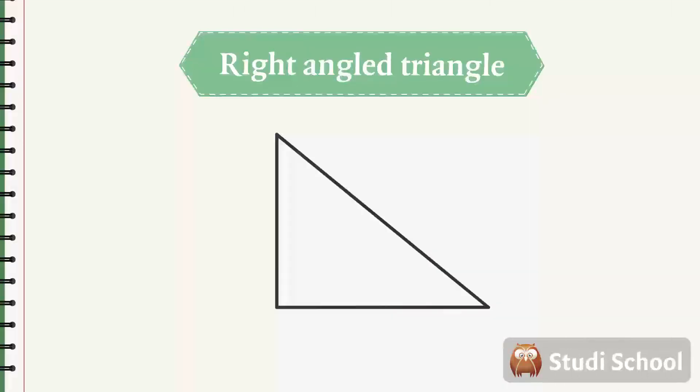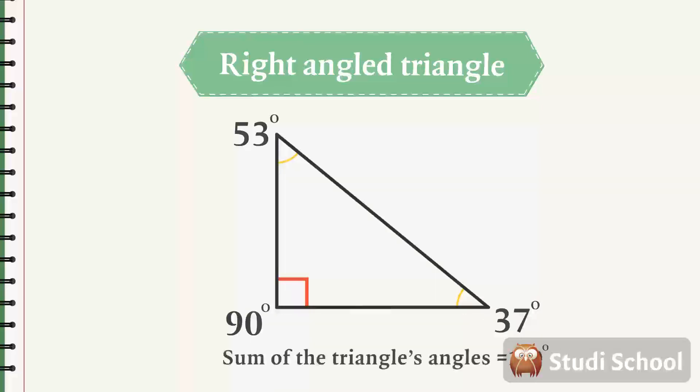The angles of a triangle have a special property. If you measure them carefully and add them together, you always get the sum of 180 degrees. This is a right-angled triangle, meaning one of the angles is 90 degrees. The other two are 53 and 37 degrees. 90 plus 53 plus 37 equals 180 degrees. The sum of the angles is 180 degrees, just as it is for all triangles.